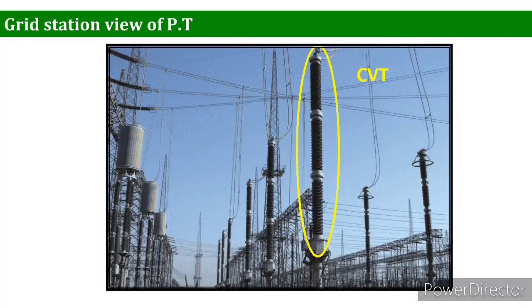Students often confuse how CTs and PTs look in a grid station because they are encapsulated in bushings. As you can see, the yellow circle indicates a CVT — it is basically divided into three parts, and all the internal working has been discussed in our previous slides.